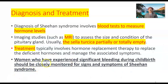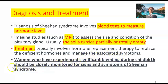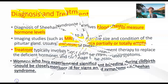Diagnosis and treatment. Diagnosis of Sheehan syndrome involves blood tests to measure hormone levels — particularly hormones of the anterior pituitary gland — and imaging studies such as MRI to assess the size and condition of the pituitary gland. Usually the sella turcica is partially or totally empty. Treatment typically involves hormone replacement therapy to replace the deficient hormones and manage associated symptoms. Women who have experienced significant bleeding during childbirth should be closely monitored for signs and symptoms of Sheehan syndrome.